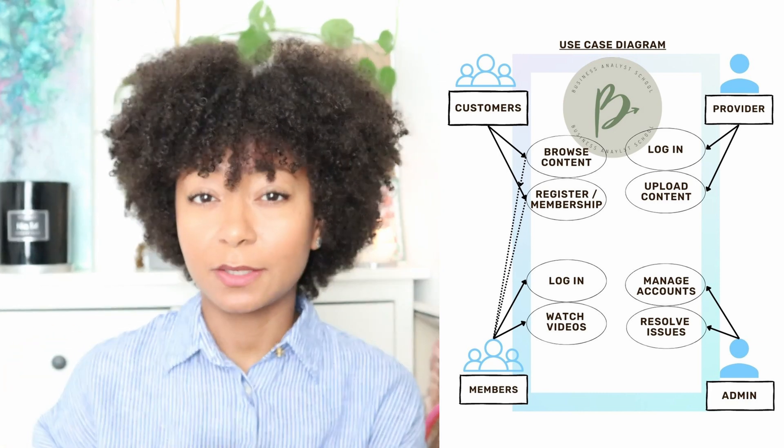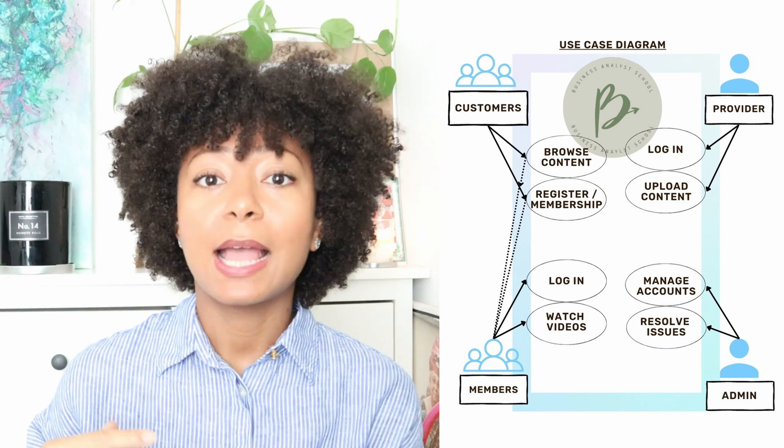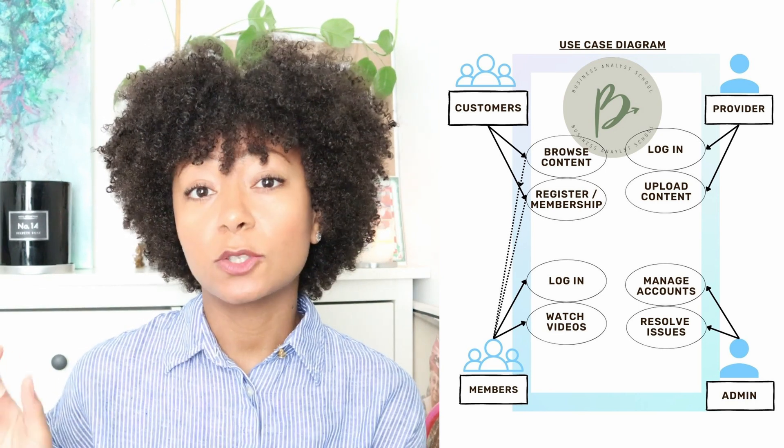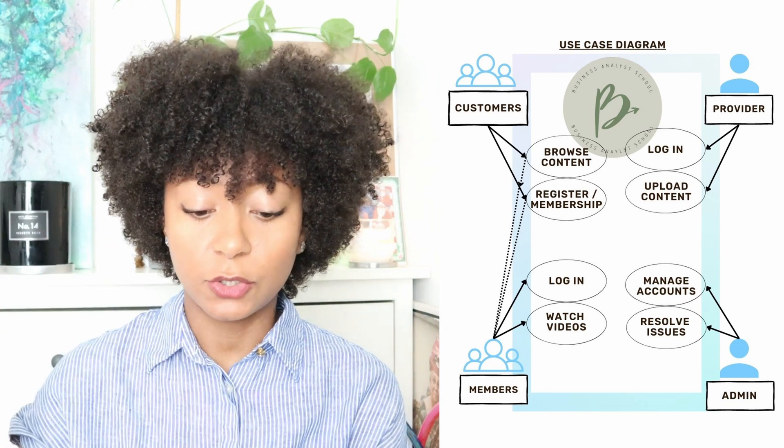Relationships show the interaction between the actors and the use cases, and they are represented by a solid line between the actor and the use case — this line is called an association. There are four types of relationships that link the actor and the use case; these include the association, the extend, and the generalization. For today's video I'll be showing you the most common one — the association — which shows the initial and main link between the actor and the first task they perform within the system. The association is simply a solid line between the actor and the use case.